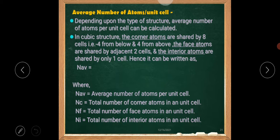let us start with average number of atoms per unit cell. Depending upon the type of structure, average number of atoms per unit cell can be calculated.